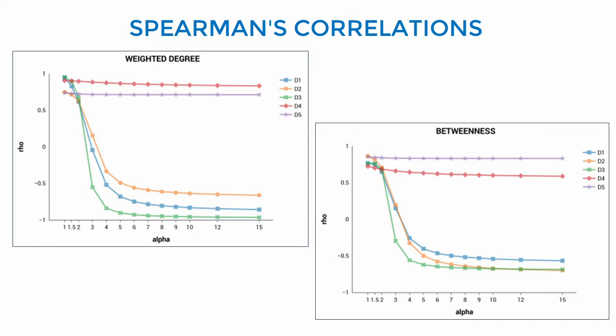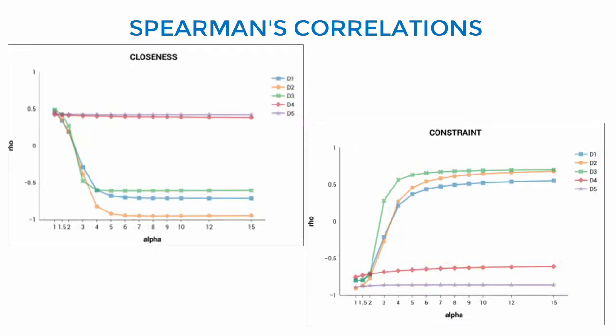Here we show the cases of weighted degree and betweenness, and in the next slide of closeness and constraint. In general, we see that all correlations drop when we increase the value of the alpha coefficient.